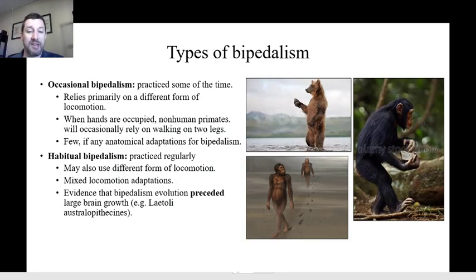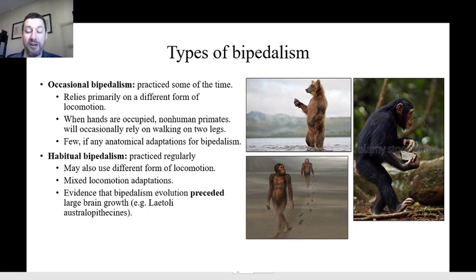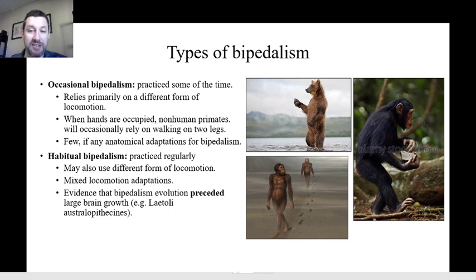There are three types of bipedalism: occasional, habitual, and obligate. Some of our ancestors were first occasional and then habitual, and there are other animals that are mostly occasional or in some cases habitual bipeds. Occasional bipedalism is when you practice bipedalism some of the time — animals that are occasional bipeds rely primarily on some other form of locomotion. For instance, bears walk around mostly on four legs but have the ability to stand up on two legs and waddle around a little bit, doing so when fighting, trying to get into a tree, or trying to reach a bee's nest. They don't walk around on two legs all the time — it's quite uncomfortable for them. Because they don't do it very often, they have few or no anatomical adaptations for it.